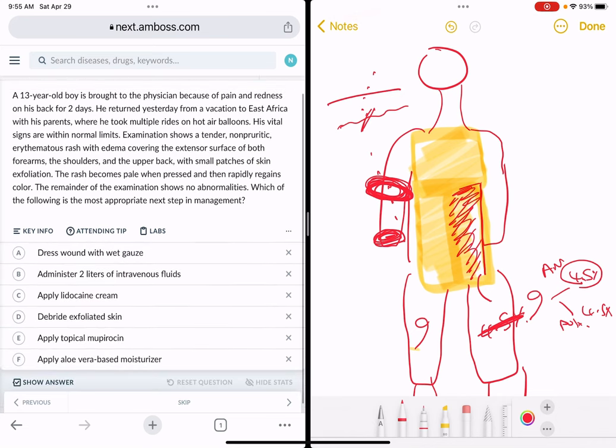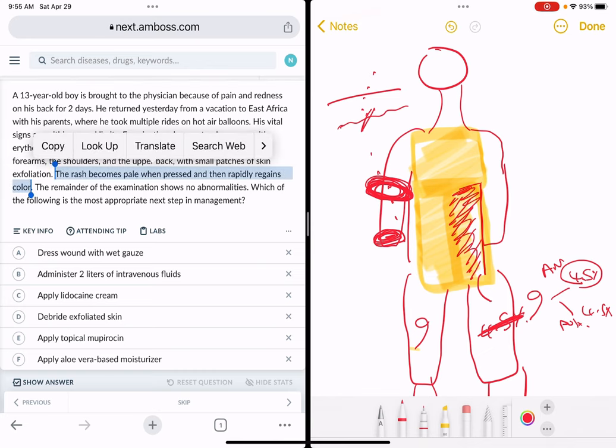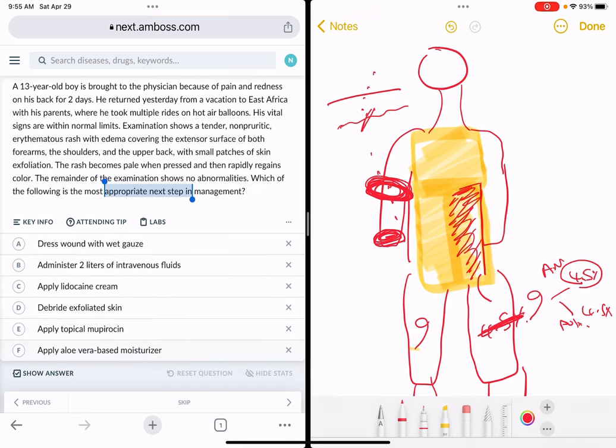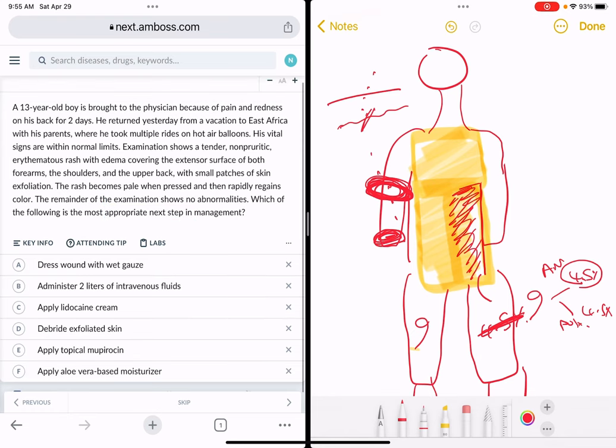Next up, we have another patient. The rash becomes pale when pressed and then rapidly regains color, so it indicates blanching of the erythema. The remainder of the exam shows no abnormalities. Which is the most appropriate next step? The next steps all show management of the local wound: dress wound with wet gauze, administer two liters of IV fluids, apply lidocaine cream, debride exfoliated skin and apply topical mupirocin which is an antibiotic, or apply aloe vera-based moisture. Most of these answer choices target the burn wound itself except answer choice B, which mentions IV fluids.